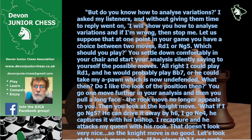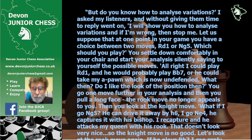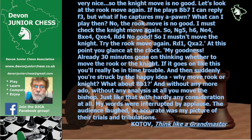You settle down comfortably in your chair and start your analysis silently, saying to yourself: 'I could play Rd1, and then he would probably play bishop b7, or he could take my a-pawn, which is now undefended. What then? Do I like the look of the position?' You go one move further and pull a long face — the rook move no longer appeals. Then you look at the knight move: if I go knight to g5, he can drive it away by h6, I go Ne4, he captures with his bishop, I recapture, and then he takes my queen with his rook. That doesn't look very nice, so the knight move is no good.